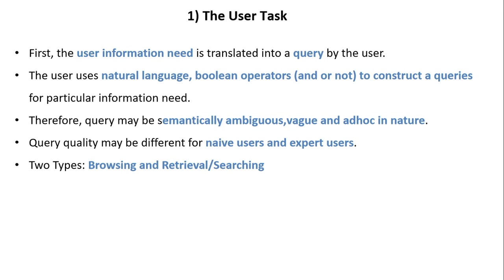For user task, the user's information need is translated into a query. The user uses natural language and boolean operators to construct queries for a particular information need. Therefore, a query may be semantically ambiguous, vague, and ad hoc in nature. Query quality may differ for different types of users, for example naive users and expert users. Two types of user tasks are browsing and retrieval searching.